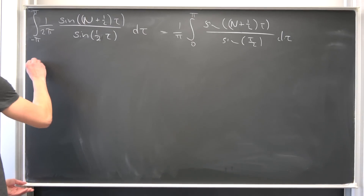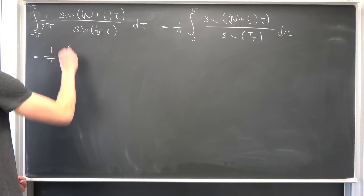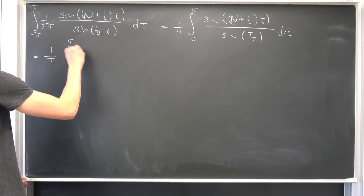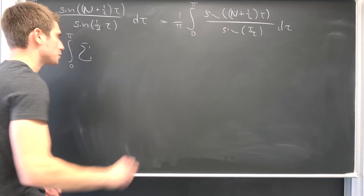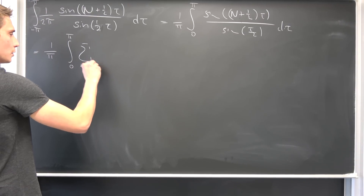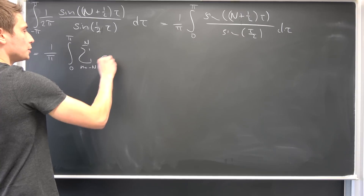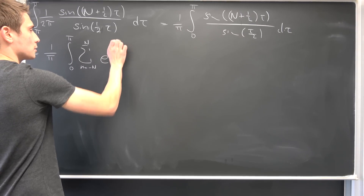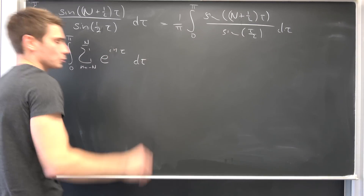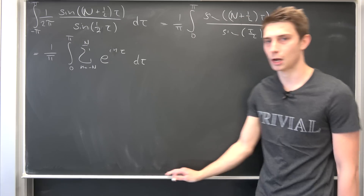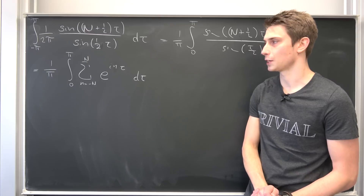So we turn this into 1/π times the integral from 0 to π of the finite sum running from n equals negative N to positive N of e^(inτ) dτ. This is just what we were talking about last time.